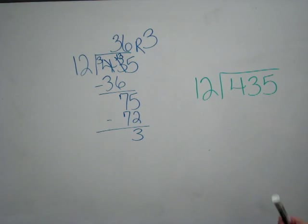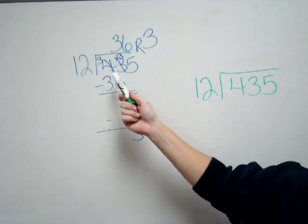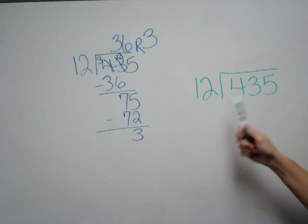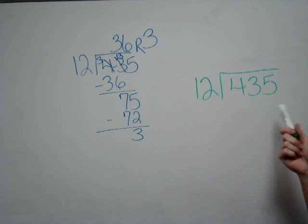Some people have a hard time figuring out what these numbers are and how to divide correctly. So we're going to take 12 and try to figure out how many 12s will go into 435.